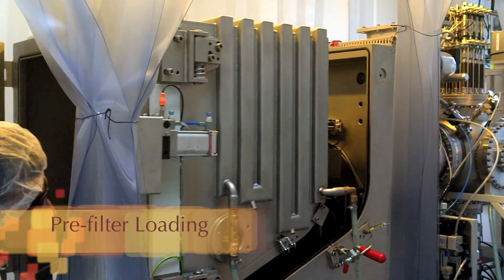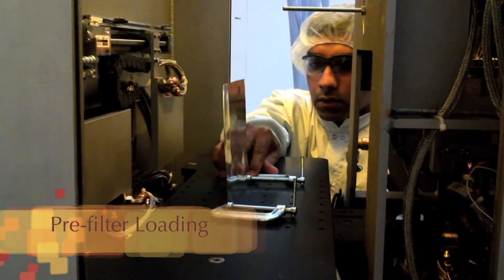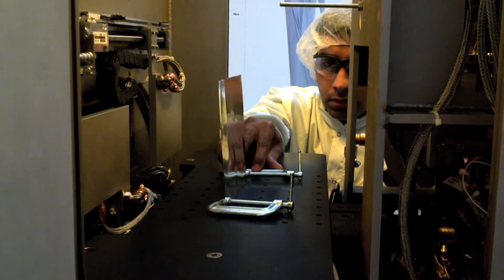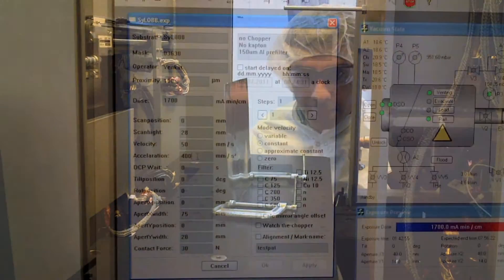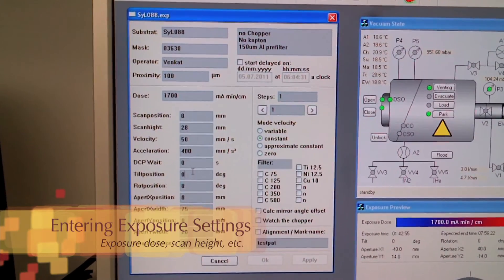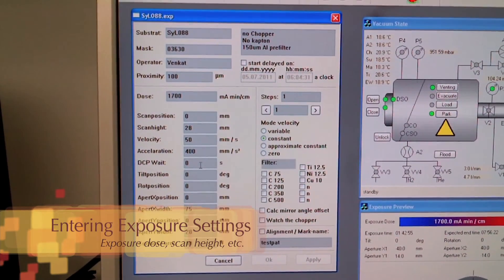Once the dose is calculated and the sample loaded, the beamline equipment are set to the calculated positions and the pre-filter is loaded inside the scanner. Using the dedicated scanner software, the exposure settings are entered.